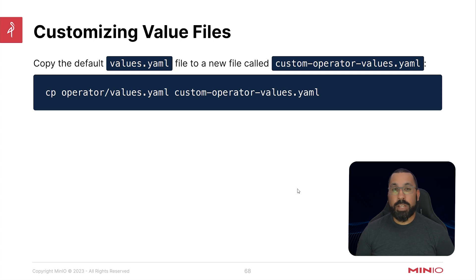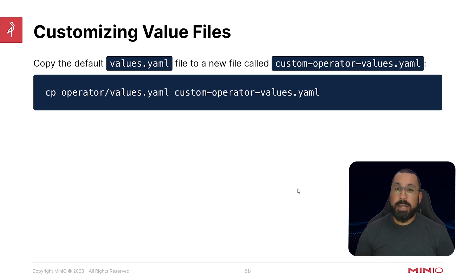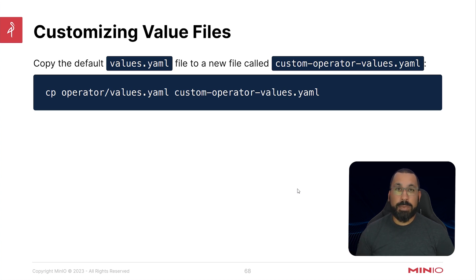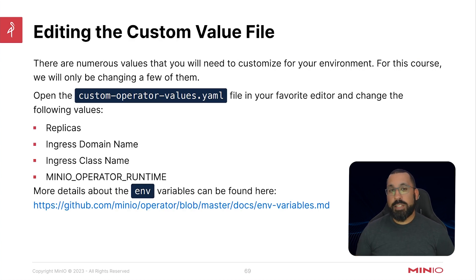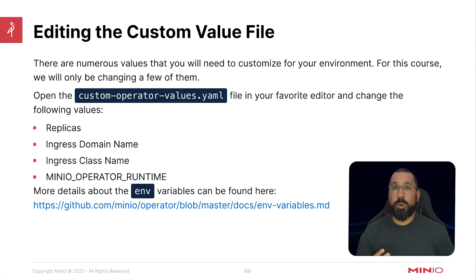We're going to copy the default values file to a new file called 'custom-operator-values' — you can name it whatever you like, and if you're deploying to multiple environments, name it something that identifies the environment. This is also a good opportunity to commit it to source code control, such as GitHub, so you have a record of the exact values used for each particular deployment that you and your team can reference. In this scenario, we're only going to modify a few things — out of the many dozens of options, we're focusing on just four.